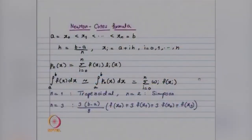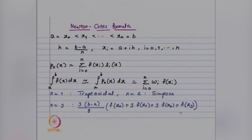For Newton-Cotes, you have interval [a,b], subdivide it into n equal parts, consider n+1 points, fit a polynomial of degree less than or equal to n, and that gives the Newton-Cotes formula. If you choose n=1 with two endpoints, that gives the trapezoidal rule; n=2 with two endpoints and midpoint gives Simpson's rule. For n=3, you get a formula of the form (b−a)·(3/8)·[f(x₀) + 3f(x₁) + 3f(x₂) + f(x₃)], where the coefficients 1, 3, 3, 1 add up to 8. You can choose general n to find an approximate quadrature formula.